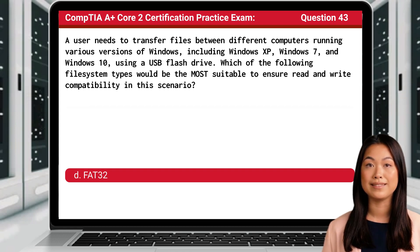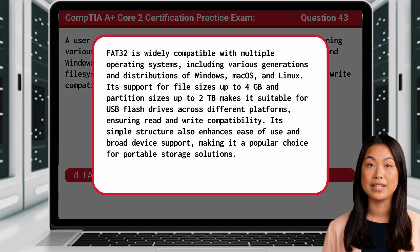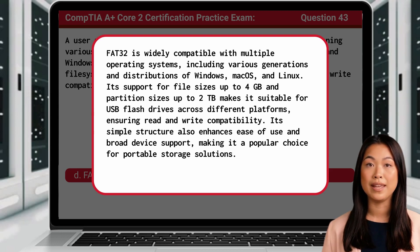The answer is D: FAT32. FAT32 is widely compatible with multiple operating systems, including various generations and distributions of Windows, Mac OS, and Linux. Its support for file sizes up to 4GB and partition sizes up to 2TB makes it suitable for USB flash drives across different platforms, ensuring read-and-write compatibility. Its simple structure also enhances ease of use and broad device support, making it a popular choice for portable storage solutions.